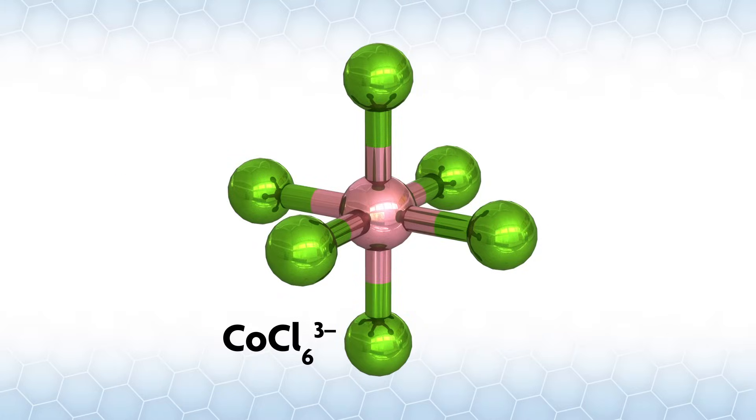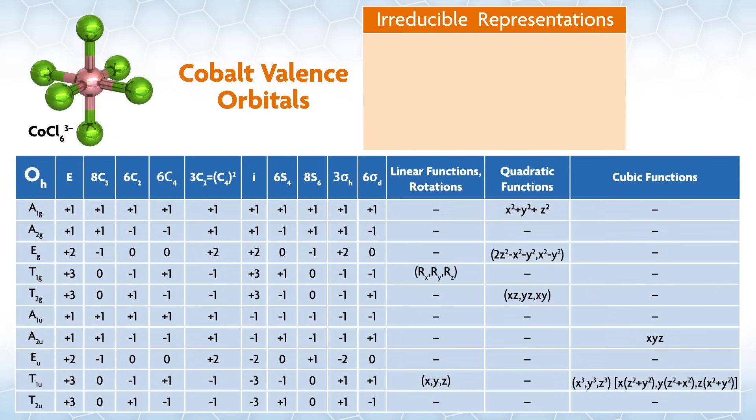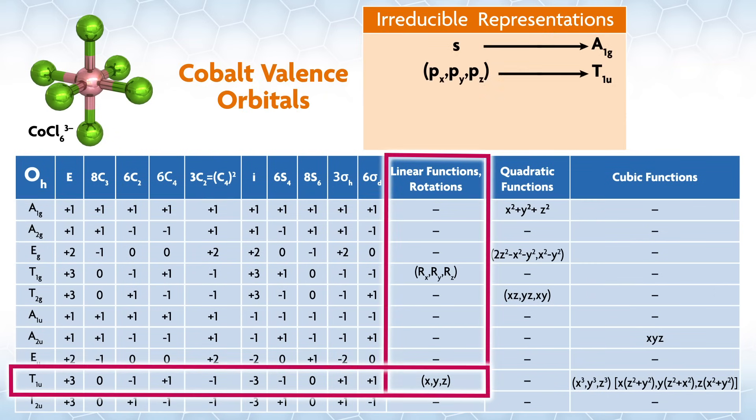As one last example, let's look at cobalt hexachloride 3 minus, which we found had octahedral symmetry in a previous video. Here, we can assign all the valence orbitals from cobalt by looking at the linear and quadratic functions, which gives us this.